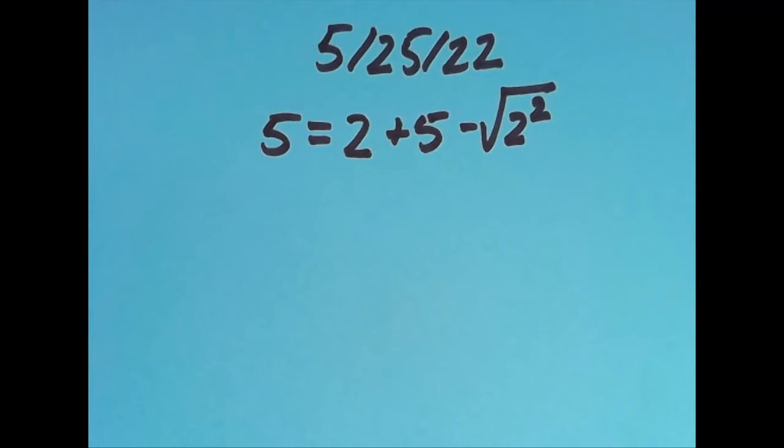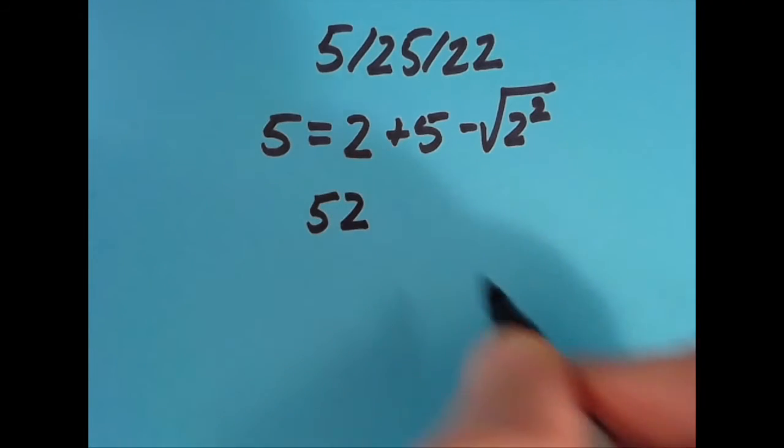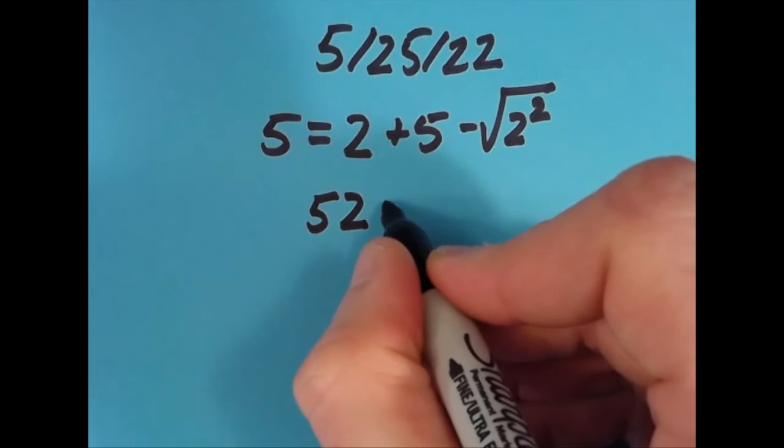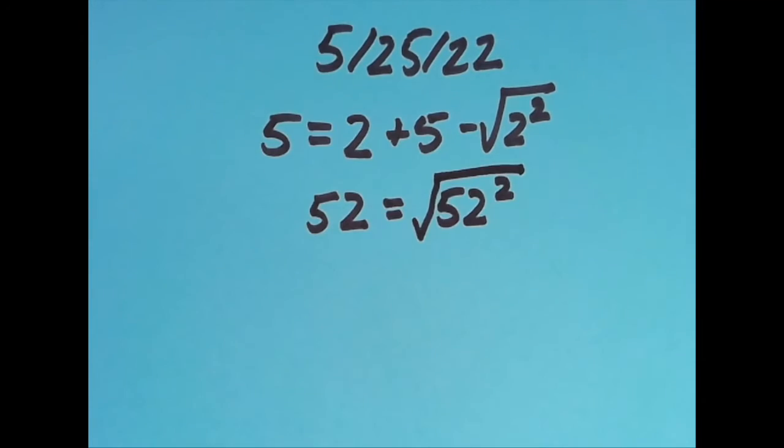I tried it again by moving the equal sign over one spot to the right, and I really like this one here. I said that 52 equals the square root of 52 squared.